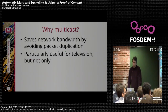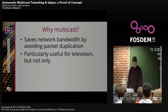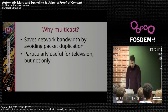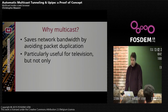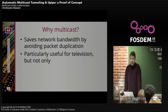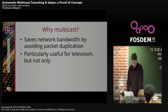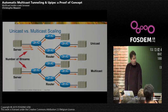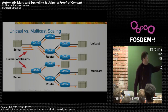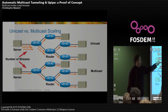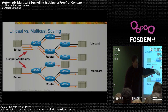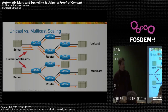Starting with a little introduction about multicast: why do you want to do multicast? Because it saves network bandwidth by avoiding packet duplication, and it is particularly useful for television, but not only. In a unicast setup, the data is duplicated — here three times, here two times — in the backbone.